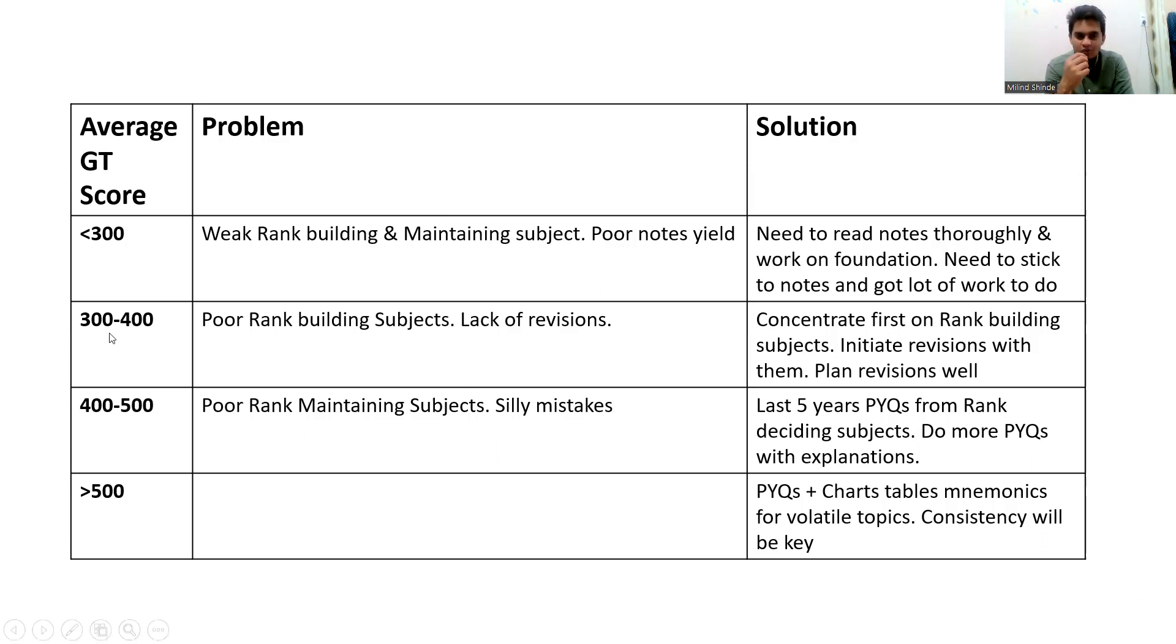Those who are between 300 to 400—I will not say that you are in a good score zone. You are also in a very volatile zone. But the thing for your rank is also similarly poor rank building subject. I have also said in my analysis that to get into top 20,000 rank, you should have above 450, 500 score. So you should have a good command on your rank building subject. Then only you are going to get into those ranks. Also, you have problem with your revisions. Unless and until you are going to make your revisions better, you are not going to improve your ranks. So again, for this group also, I will say concentrate on rank building subject. Spend more time on your rank building subject. You have to initiate revisions, plan better revisions. Then only you can go ahead.